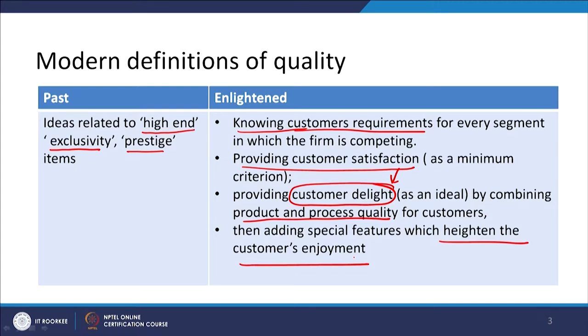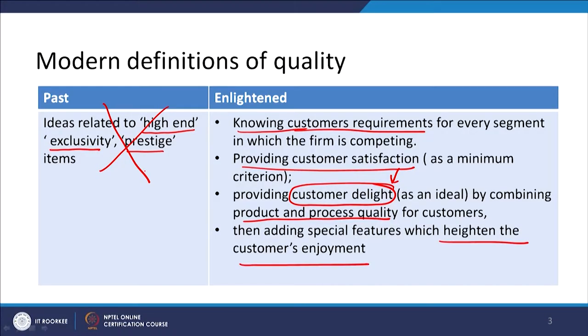So you see that in the enlightened view, we are talking about customer satisfaction, then we move to customer delightness, and finally we are talking about customer enjoyment. This customer enjoyment is possible with respect to all types of products. You need to see what value you are offering to the customer. So the idea of high-end exclusivity and prestige is no longer valid. Depending upon the type of product, if you are able to find all the features and also get some additional feature, this will provide enjoyment.